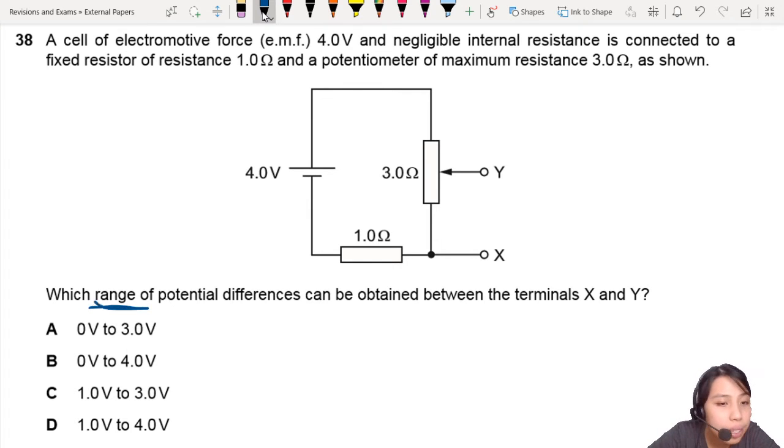What is the range of potential differences that can be obtained between terminal X and Y? Basically saying, if you connect a voltmeter here, what's the PD that you can measure? So VXY.